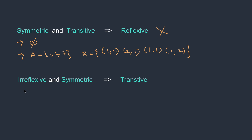One more: if a relation is reflexive and symmetric, can it be transitive? No, it cannot. Take an example and verify — you can check yourself that it is not possible.